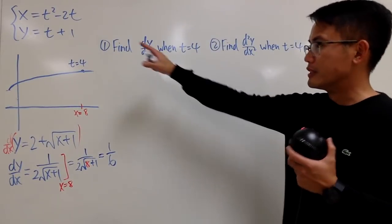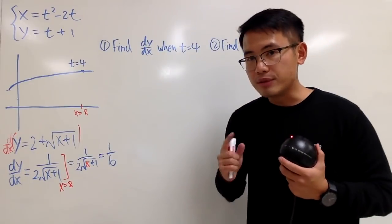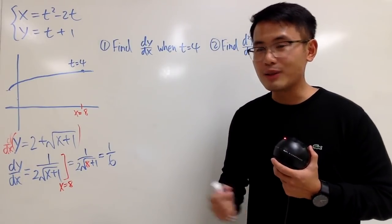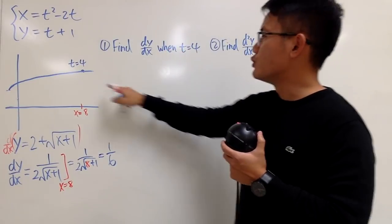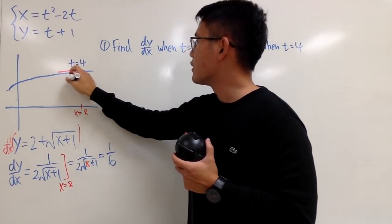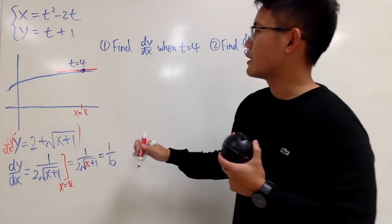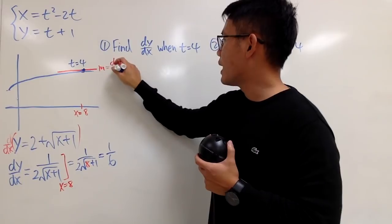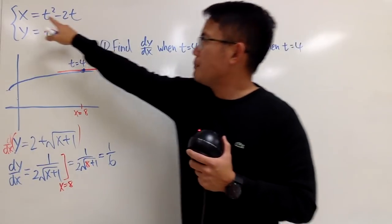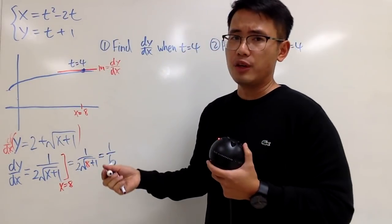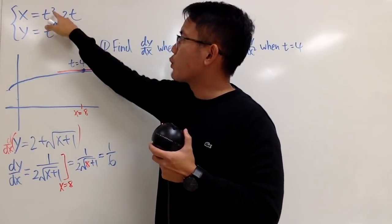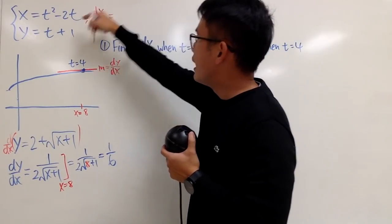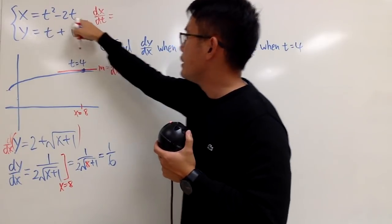Now let's see if we can do it with just the parametric equations. We need to think about what dy/dx represents geometrically — it's the slope of the tangent line to the curve. So when t is 4, at this point, we want the slope of the line tangent to the curve. If you differentiate x = t²−2t with respect to t, you get dx/dt = 2t−2. And if you differentiate y with respect to t, you get dy/dt = 1.